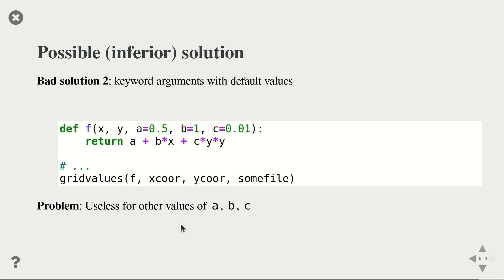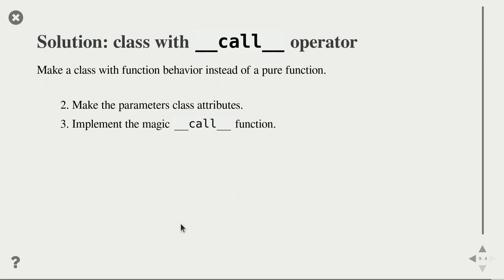Another solution is to use default values for your parameters — you can provide label names with default values, so if you don't specify a, b, and c when calling the function, Python uses the defaults. The problem is that if you want to choose different values than these defaults, this becomes useless.